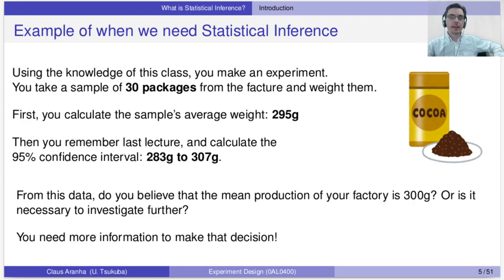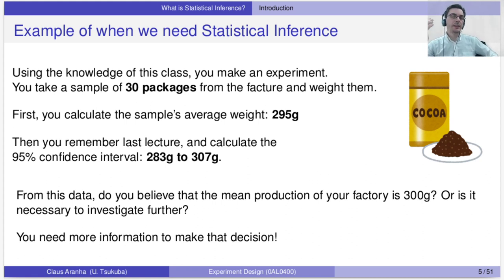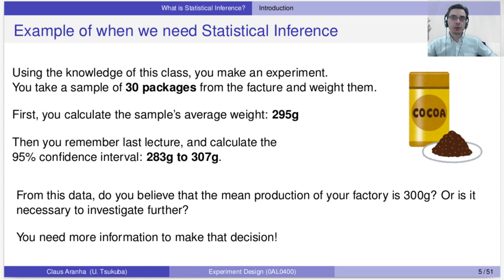Well, you took the class last week, so you think: I can do an experiment. So every six months you do an experiment to see if the average package production in your factory is within the expected value. You take a sample — let's say 30 packages — and then you calculate the sample mean. After you calculate the sample mean, you get this value: 295.